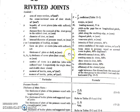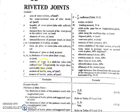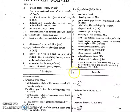This is the design data handbook, Chapter 13, which covers riveted joints. Here are some important symbols and notations: capital A is the cross-sectional area, d is the diameter of the rivet, and i is the number of rivets in the pitch line, with suffixes i1 and i2 for single shear and double shear respectively. I is the moment of inertia and J is the polar moment of inertia.